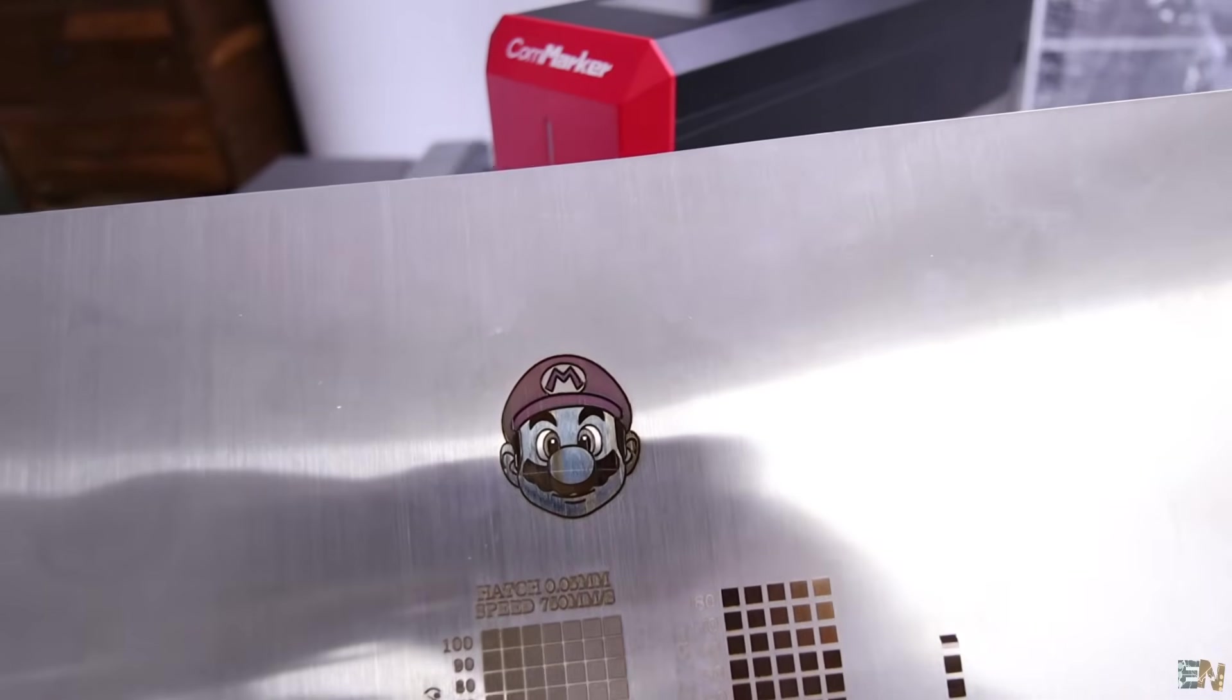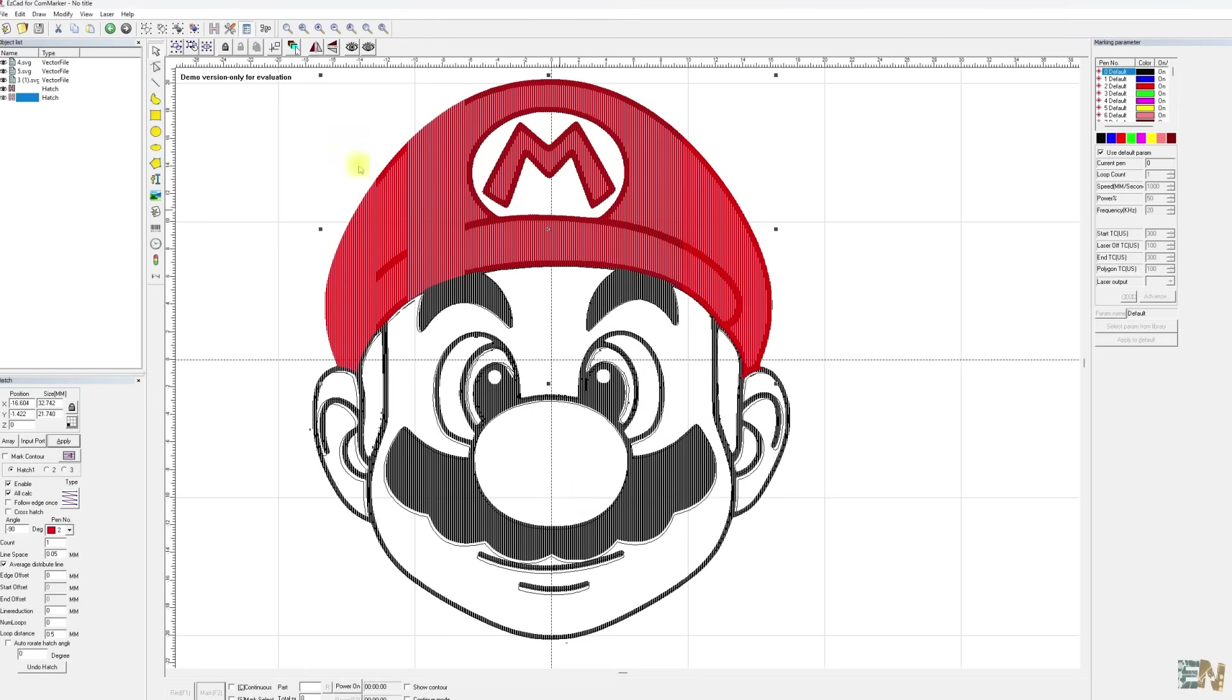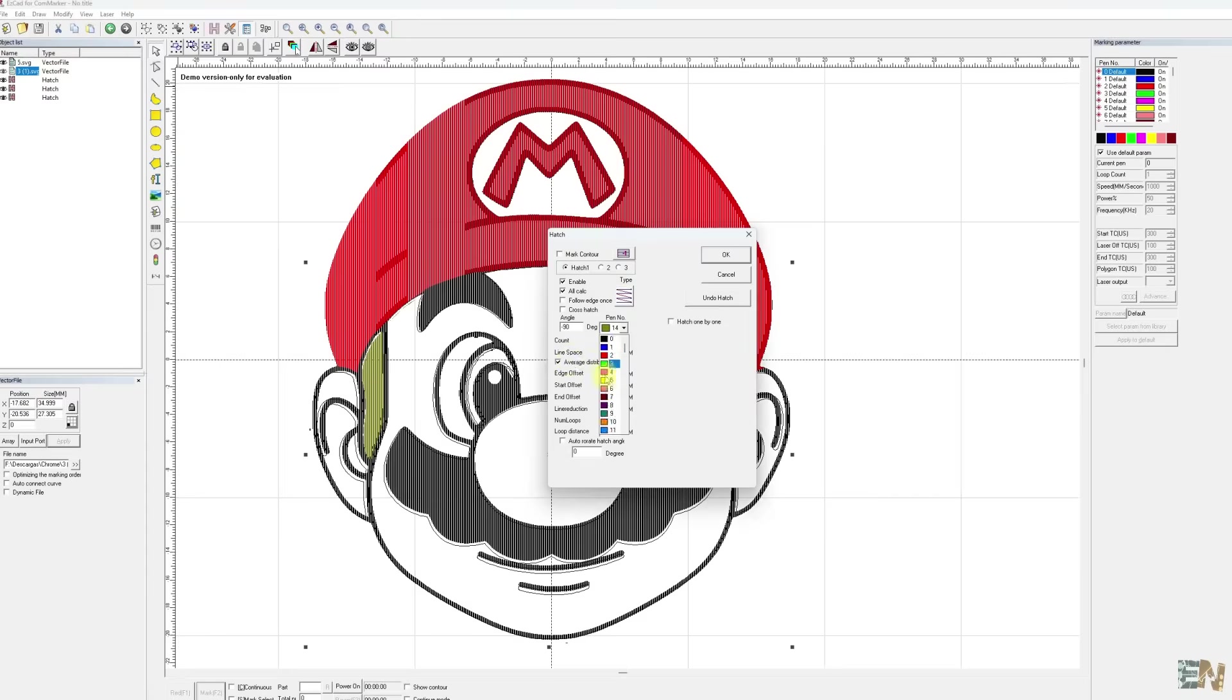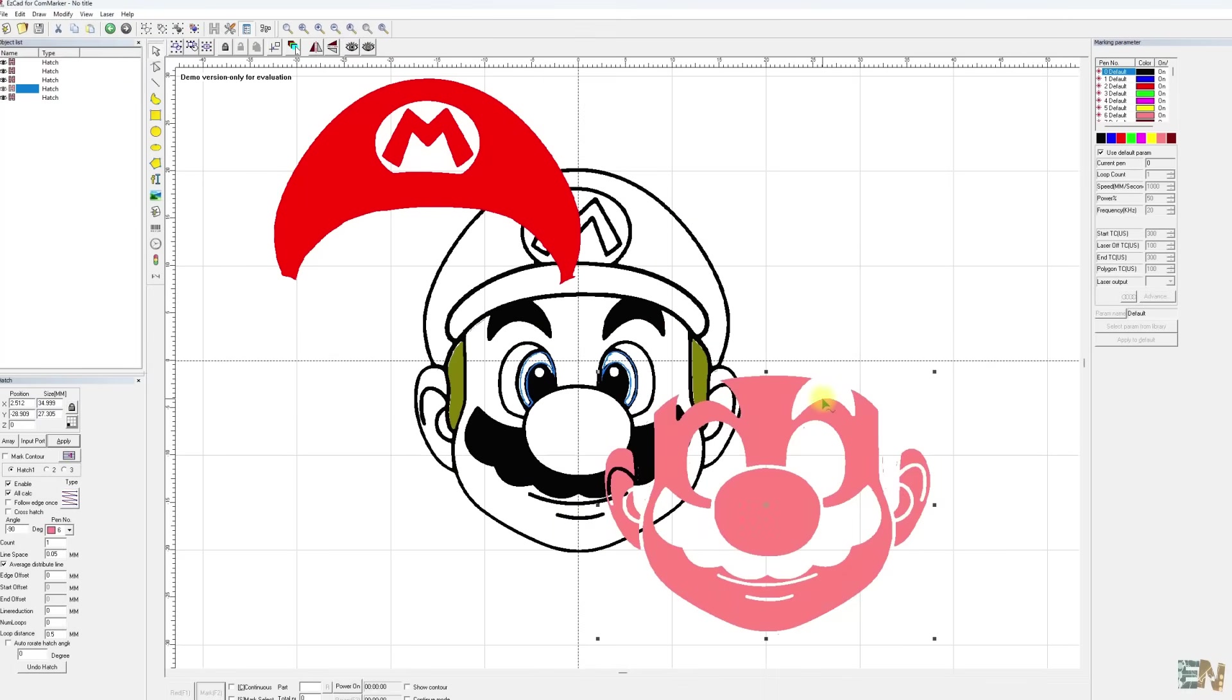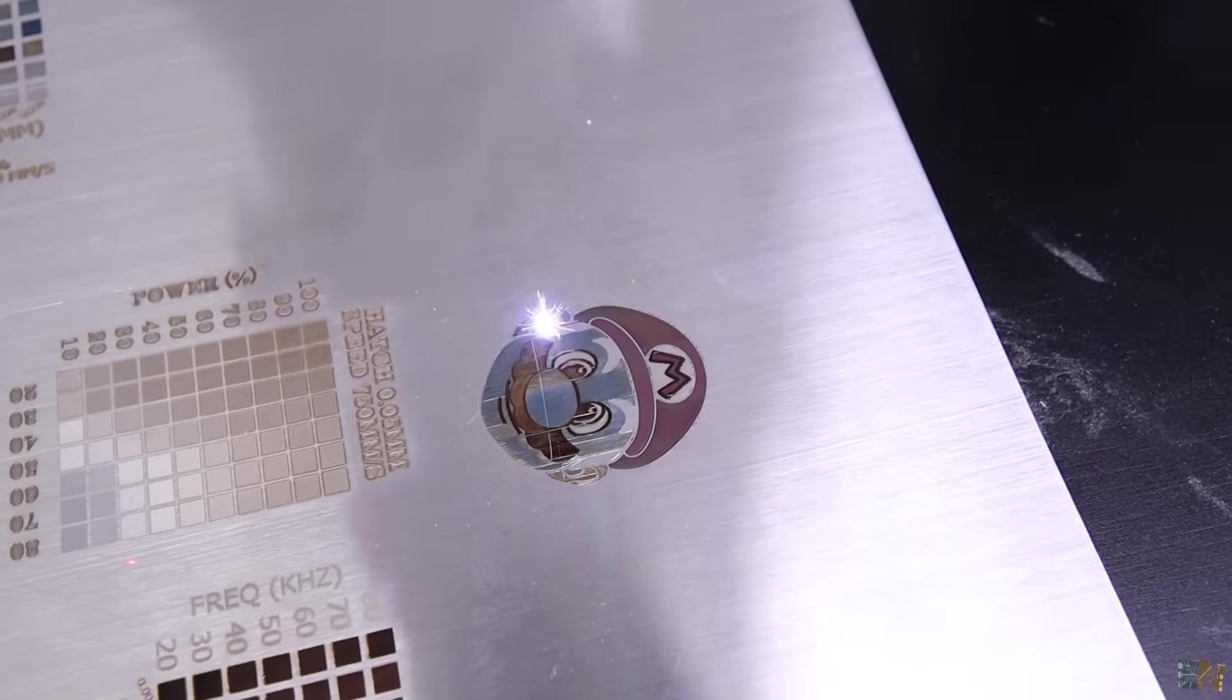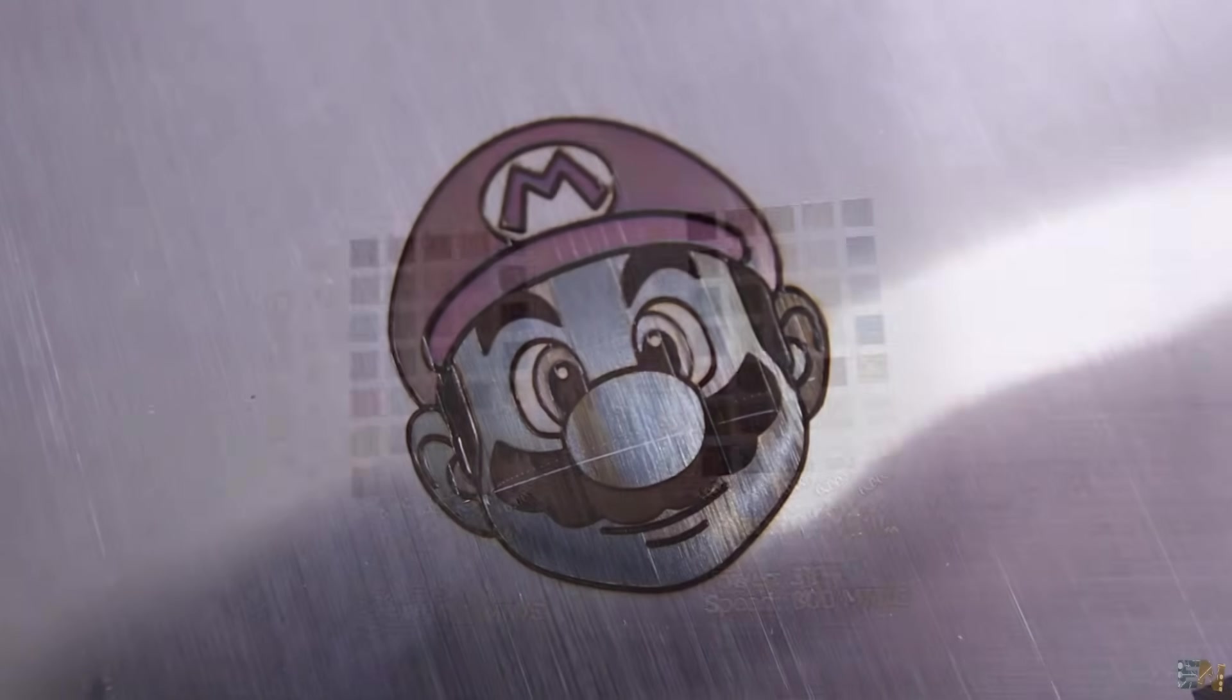But basically what you have to do is to edit the Mario picture in Photoshop and separate the head from the face, from the contour and other details. And then in EasyCAD I'm using different settings for creating different colors. And look how cool it looks. It's really fascinating that you could print colors on metals.